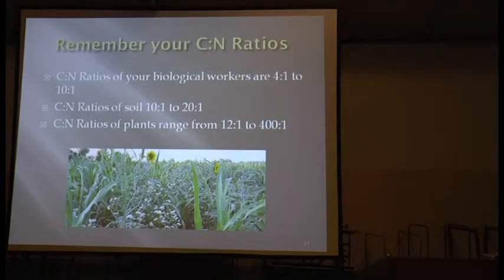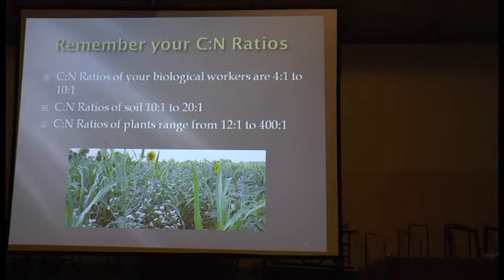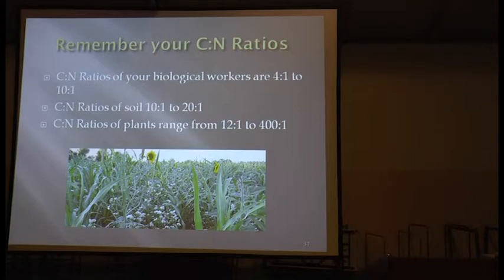Let's remember our C:N ratios: your biological workers have ratios of 4 to 1 and 10 to 1. C:N ratios of the soil are 10 to 1 to 20 to 1. C:N ratios of plants range from 12 to 400 to 1. Has anybody ever seen a pile of wood chips that just kind of sit there? That's lots of carbon — lots of fuel. But why isn't it being used? Because it has very high C:N ratios. If there's no nitrogen, it can't be processed.